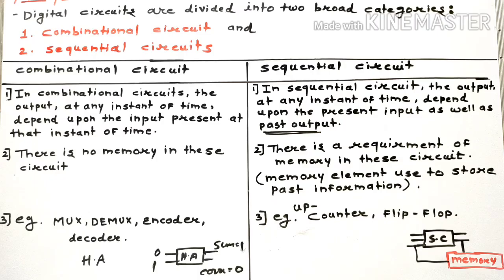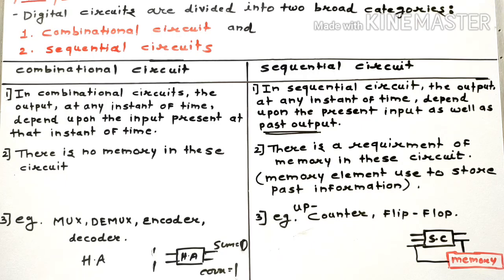Consider the combinational circuit — half adder. If we give input 01, sum becomes 1 and carry becomes 0. Now if we give input 11, sum changes to 0 and carry becomes 1. So the past output — sum was 1, carry was 0 — was not used to produce the new output. We only used the present input. So half adder comes under the category of combinational circuit because it depends only upon the present input.